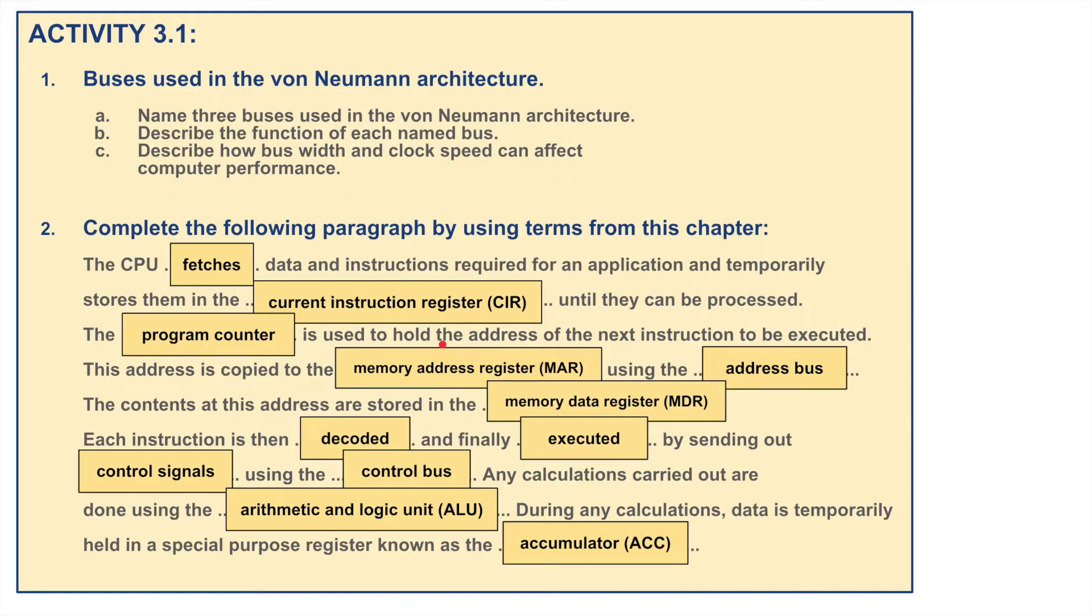We move on. I've put the words in. Complete the following paragraph by using terms from this chapter. So the CPU, it fetches data and instructions required for an application and temporarily stores them in the current instruction register, the CIR, until they can be processed. The program counter is used to hold the address of the next instruction to be executed. The address is copied to the memory address register, the MAR, using the address bus. The contents of the address is stored in the memory data register, the MDR.